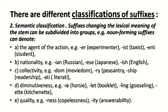The next classification of suffixes is semantic classification. Suffixes changing the lexical meaning of the stem include: noun-forming suffixes denoting the agent of an action, such as '-er', '-ist' (e.g., 'experimenter'), and '-ent' (e.g., 'student'); suffixes denoting nationality, such as '-ian' (Russian), '-ese' (Japanese), '-ish' (English); suffixes denoting collectivity, such as '-dom', '-ry', '-ship' (e.g., 'readership', 'peasantry'); suffixes denoting diminutiveness, such as '-ie' (e.g., 'horsey') and '-let' (e.g., 'booklet'); and suffixes denoting quality, such as '-ness', '-ity' (e.g., 'hopelessness', 'answerability').